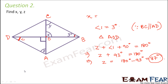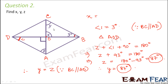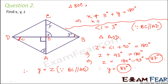Once we have found z, we can easily find y. Since BC is parallel to AD, y and z are also alternate angles, so y equals 87 degrees. To find x, we go to triangle BOC: x plus 3 degrees plus y equals 180 degrees, giving x plus 87 equals 180, therefore x equals 180 minus 90, which is 90 degrees.